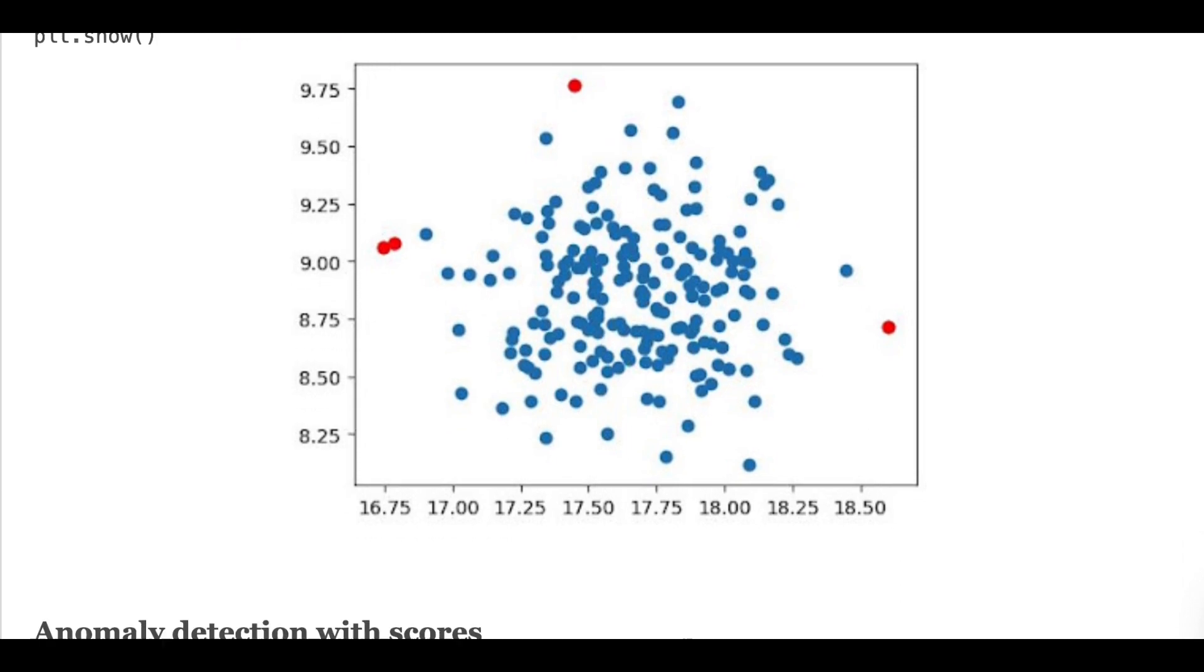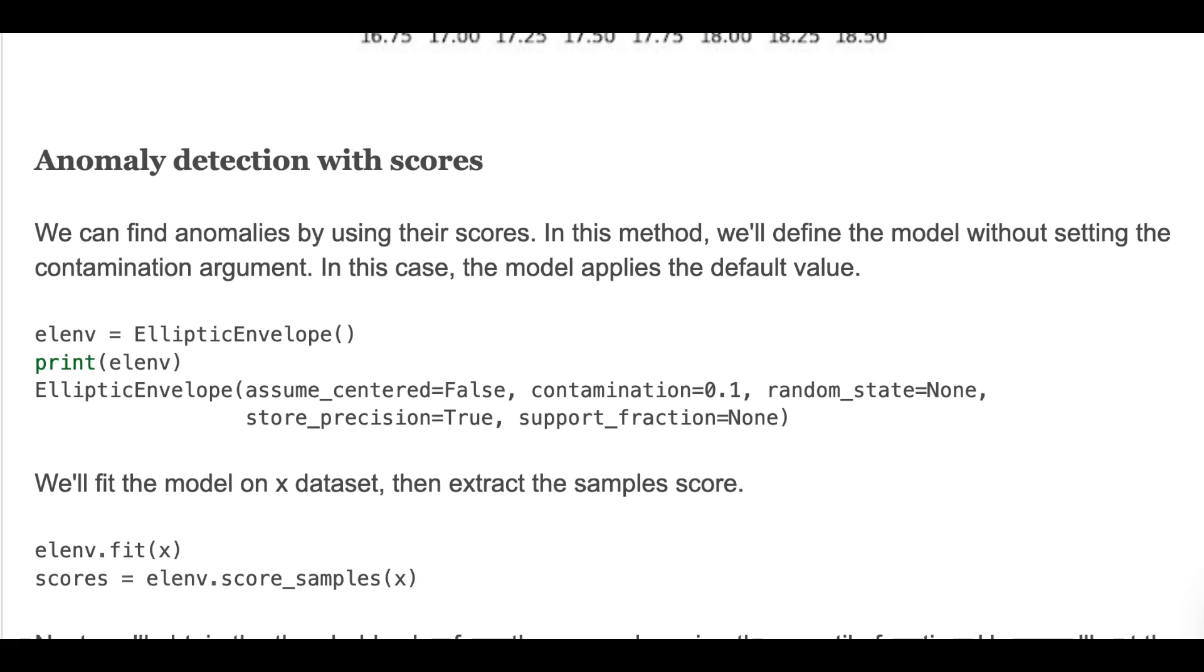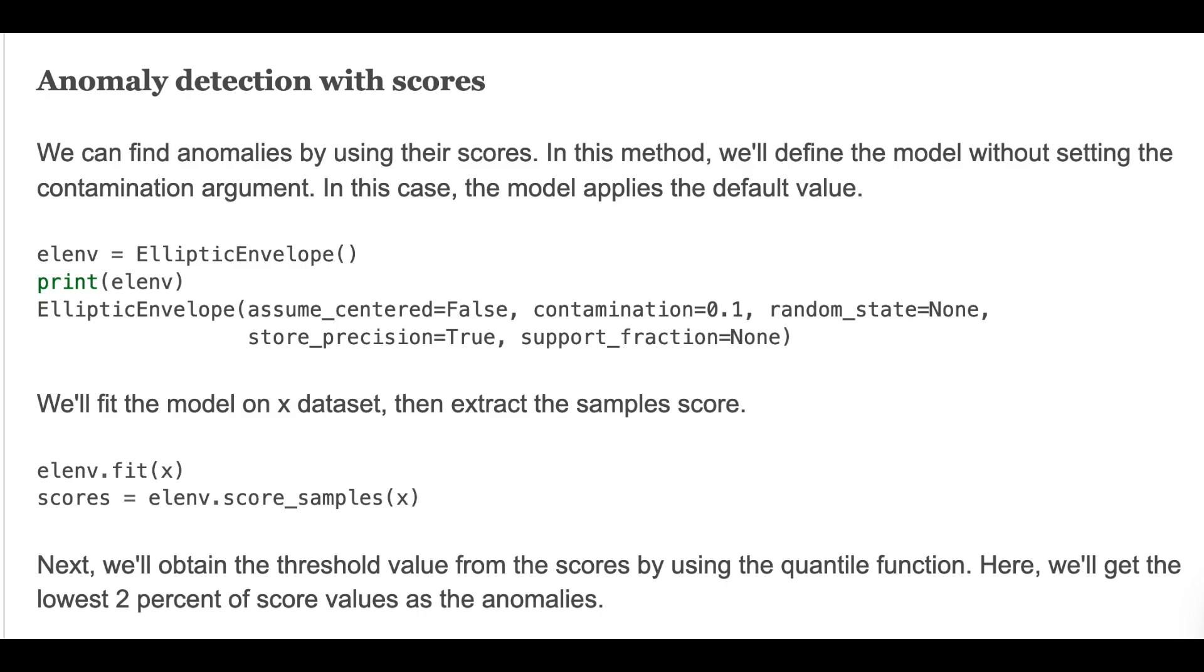In the next method, we'll use scores for anomaly detection. In this method, we'll define the model without setting the contamination argument. In this case, the model applies the default value. We'll fit the model again with the dataset, then extract the sample scores.